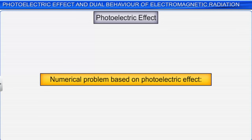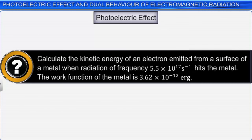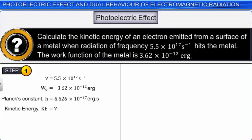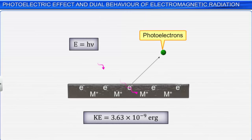Let us solve a numerical problem based on the photoelectric effect. Calculate the kinetic energy of an electron emitted from the surface of a metal when radiation of frequency 5.5 × 10¹⁷ per second hits the metal. The work function of the metal is 3.62 × 10⁻¹² ergs. Write the given data and the appropriate equation. Substituting the values of h, ν, and W₀ in the equation and solving, we get the final answer as 3.63 × 10⁻⁹ ergs. Hence, the electron will be emitted with a kinetic energy of 3.63 × 10⁻⁹ ergs.